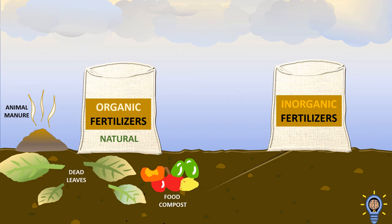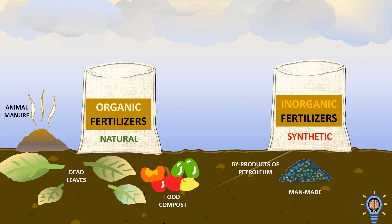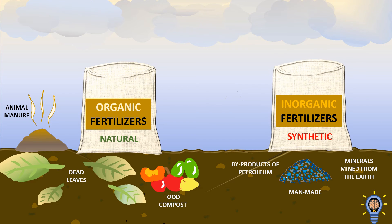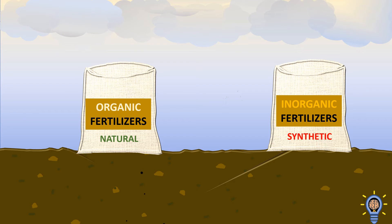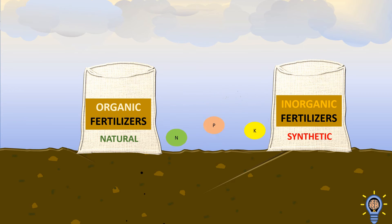Inorganic fertilisers are synthetic, which means that they are man-made, either from by-products of petroleum or chemicals and minerals mined from the earth. Fertilisers, be they organic or inorganic, both help to add nutrients into the soil, especially these three macronutrients — nitrogen, phosphorus, and potassium — which are needed in large quantities by plants.